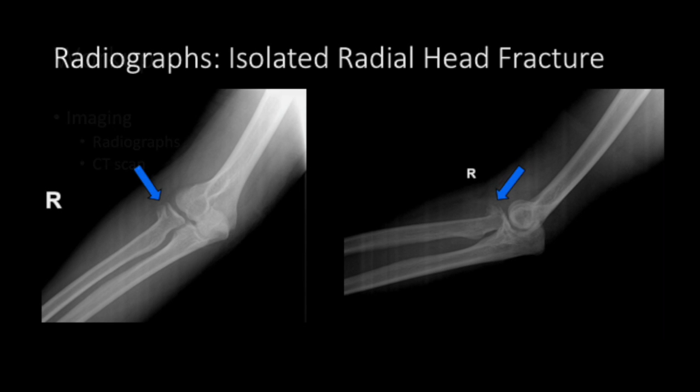Workup involves imaging: x-rays, radiographs, or CT scan. Here are radiographs of an isolated radial head fracture. You can see on the AP and lateral view the blue area pointing to a portion of the radial head that is broken.